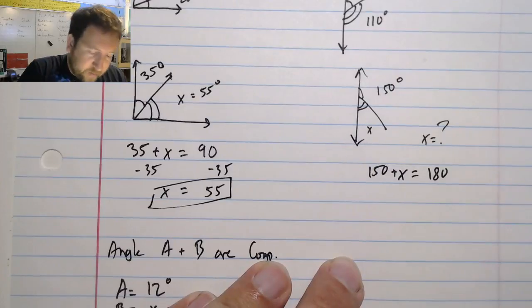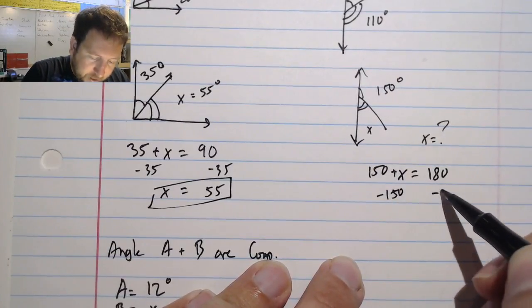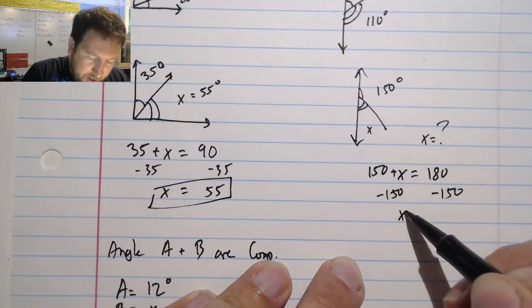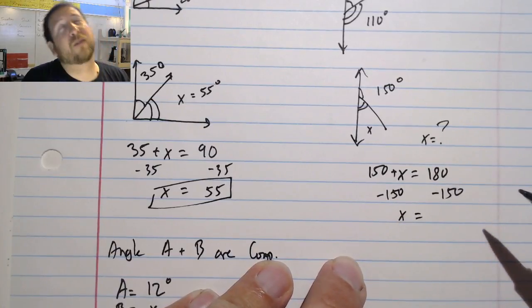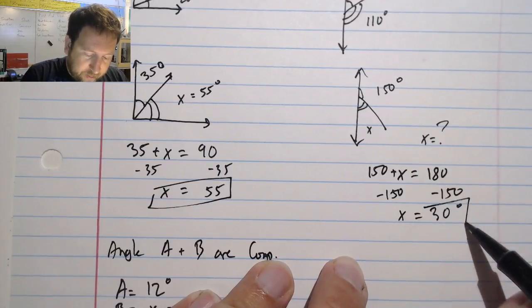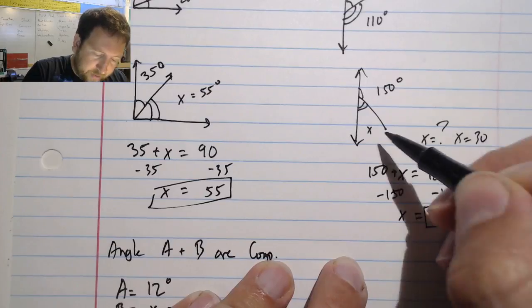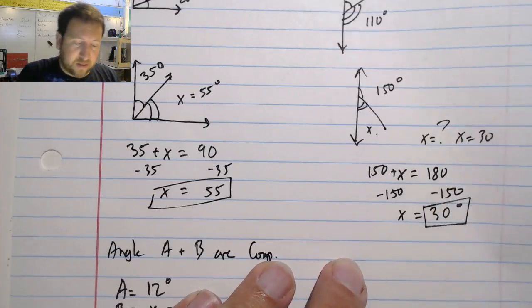So I can use my algebra to solve, just like I did before. Minus 150, minus 150. I have x equals 180 minus 150 is 30. And I can see that I have 30 degrees as my answer. x equals 30. That's how I solved using my supplementary.